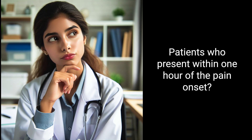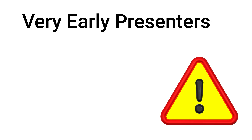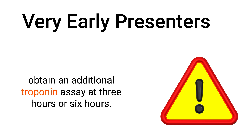How about patients who present within one hour of their symptoms — is the protocol still valid? The 0-1 or 0-2 hour algorithms apply to all patients irrespective of chest pain onset, and it's usually safe in patients presenting very early — less than two hours — but not in patients presenting within less than one hour of onset. In those patients, you may need to obtain an additional troponin assay at 3 or 6 hours.